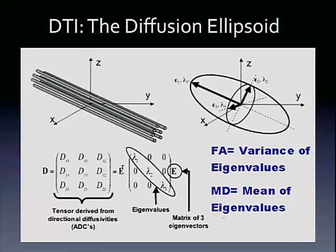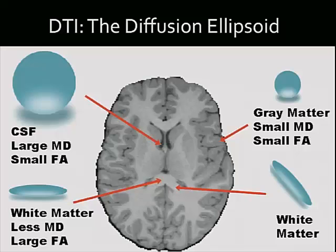If the variance is high, that means there's directionality to the motility of water. If it's low, that means there's no directionality — all the eigenvalues are roughly the same. Mean diffusivity is the mean of the eigenvalues — that's the amount of diffusivity. You can get tissue contrast with this. CSF, being essentially water, has a large amount of mean diffusivity and small FA because there's no structure there — the water molecule is free to move a lot, but it's not constrained.